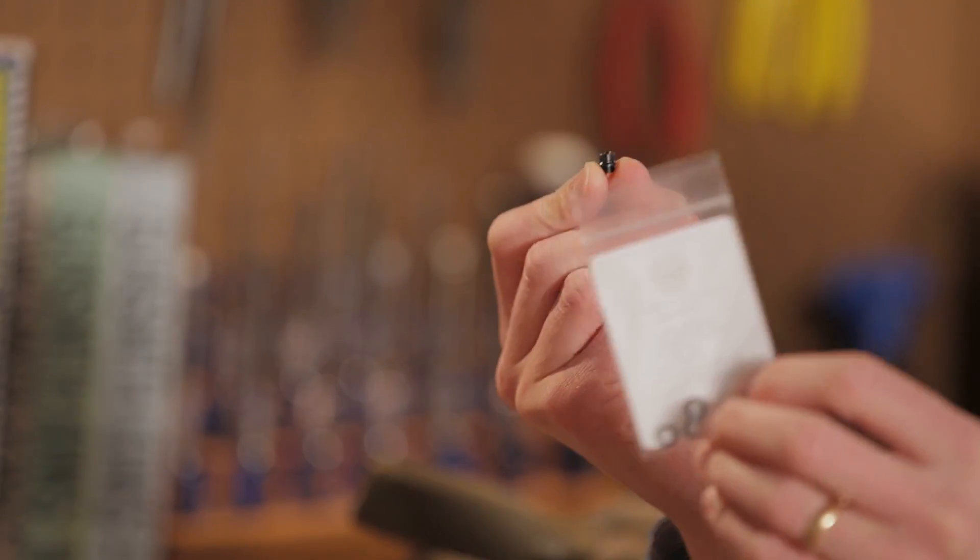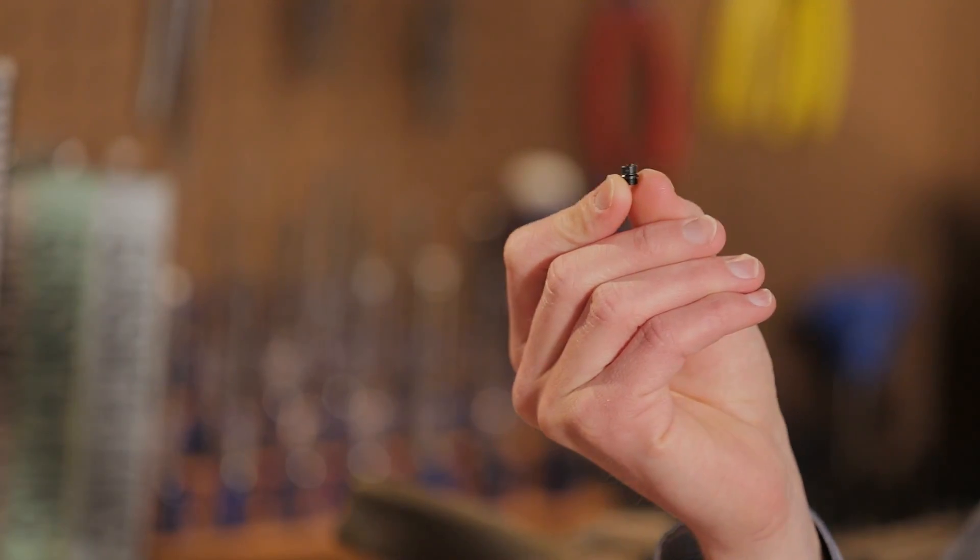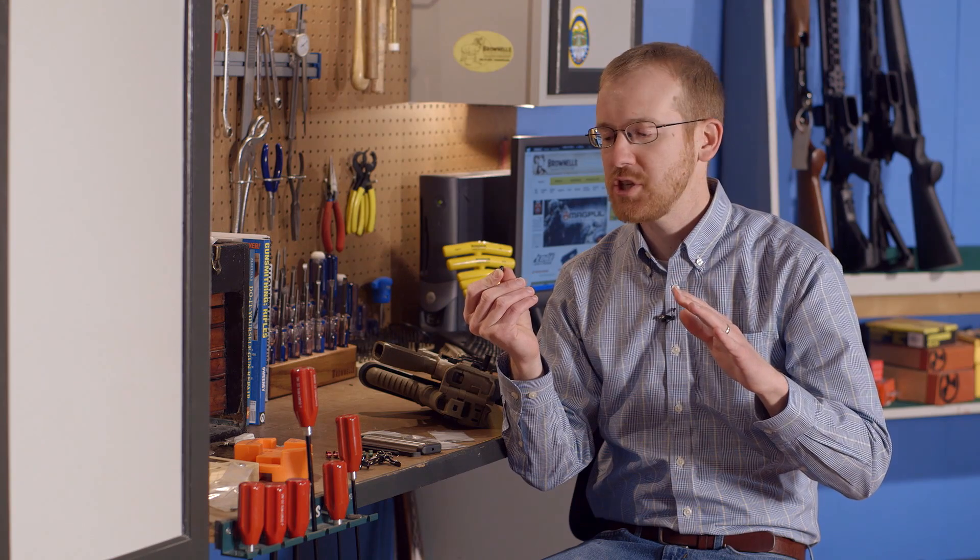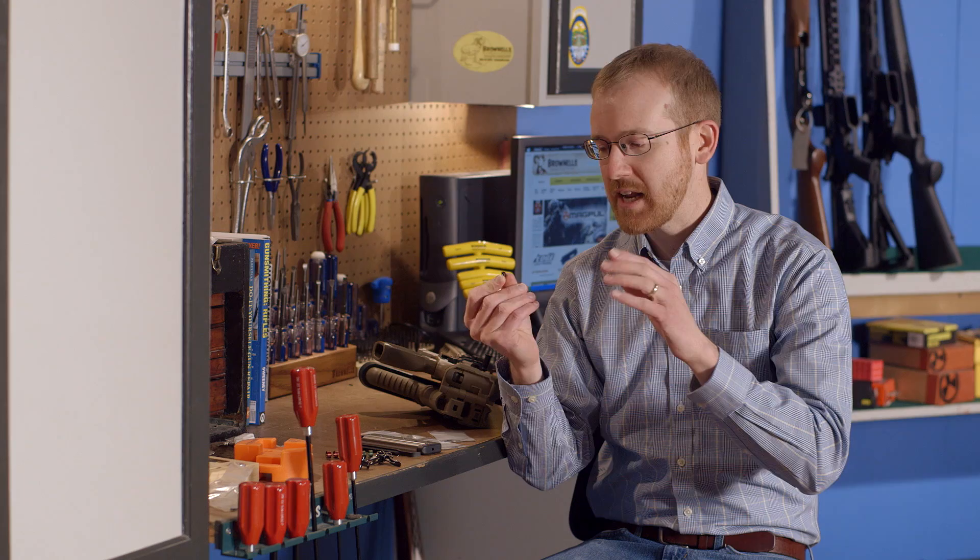That allows for the use of O-rings so that you can have your grip floating off of the grip so that your rougher grips like a G10 or your delicate ones like an ivory aren't marring your frame and you're not damaging your grips.